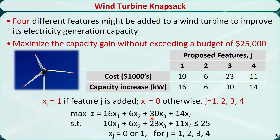In the constraint, the total cost of the features added should not exceed $25,000.